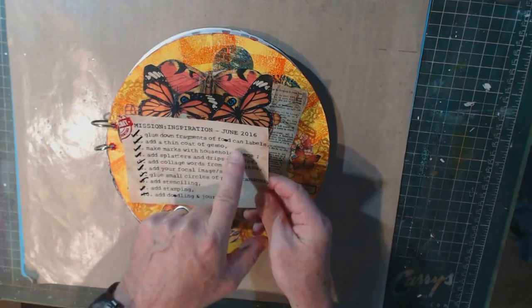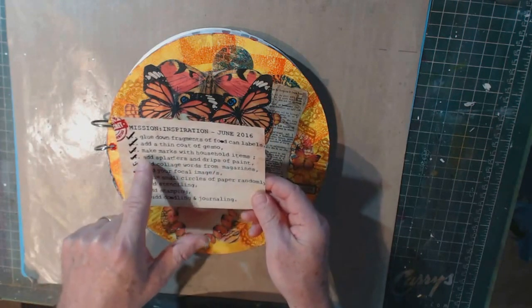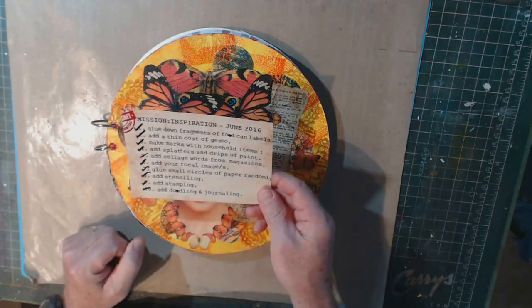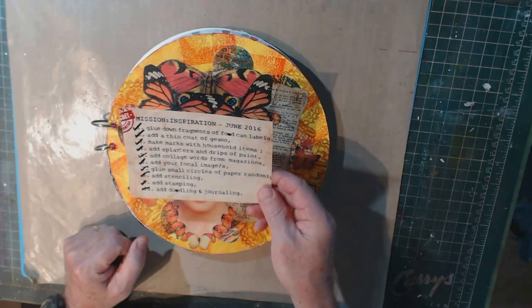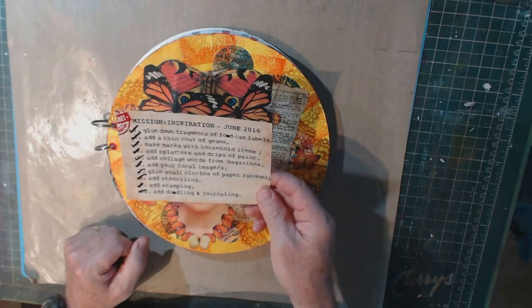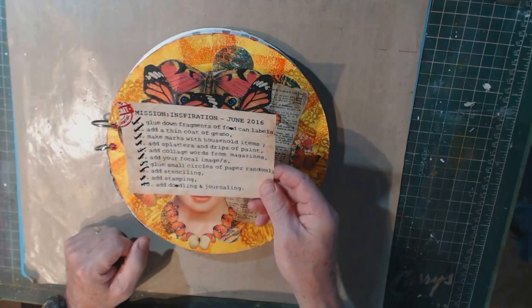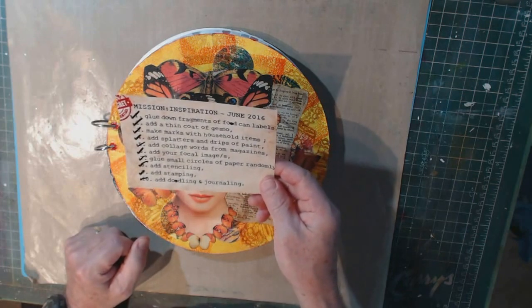He says to glue down fragments of food can labels, add a thin coat of gesso, make marks with household items, add splatters and drips of paint, add collage words from magazines, add your focal images, glue small circles of paper randomly, add stenciling, add stamping, and finally add doodling and journaling.